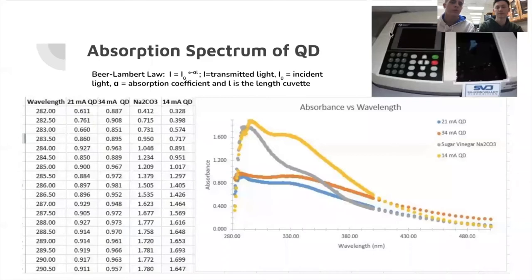Another method that we used to determine quantum dots exist was using our UV spectrometer that utilizes the Beer-Lambert law to test the absorbance of our quantum dot solutions at different wavelengths. We made a graph of our results, and you can tell on each of our solutions there's a little shoulder around 330 nanometers, proving that quantum dots exist.